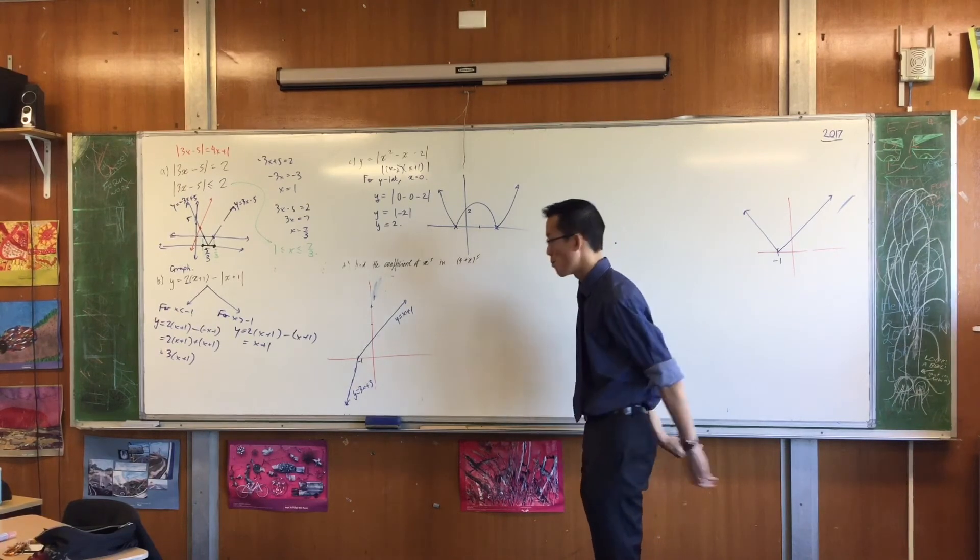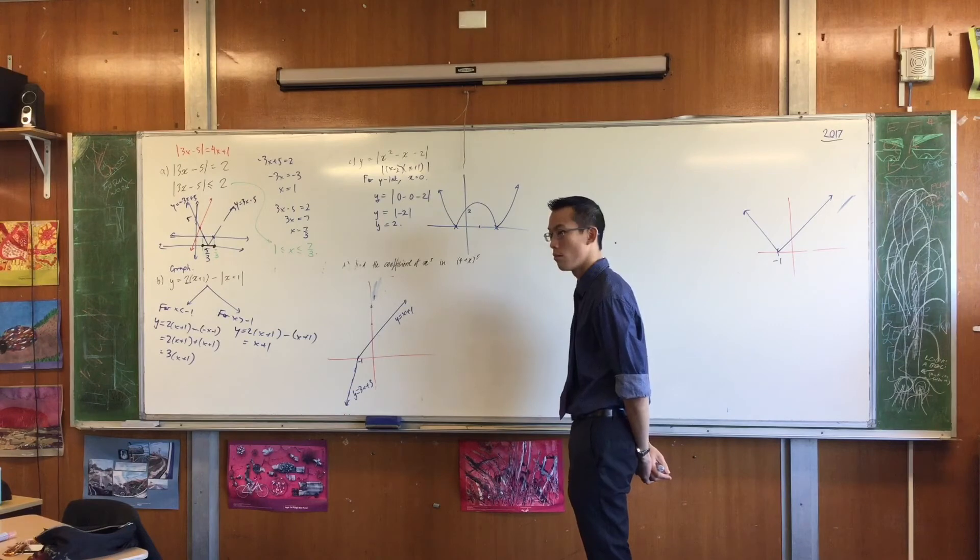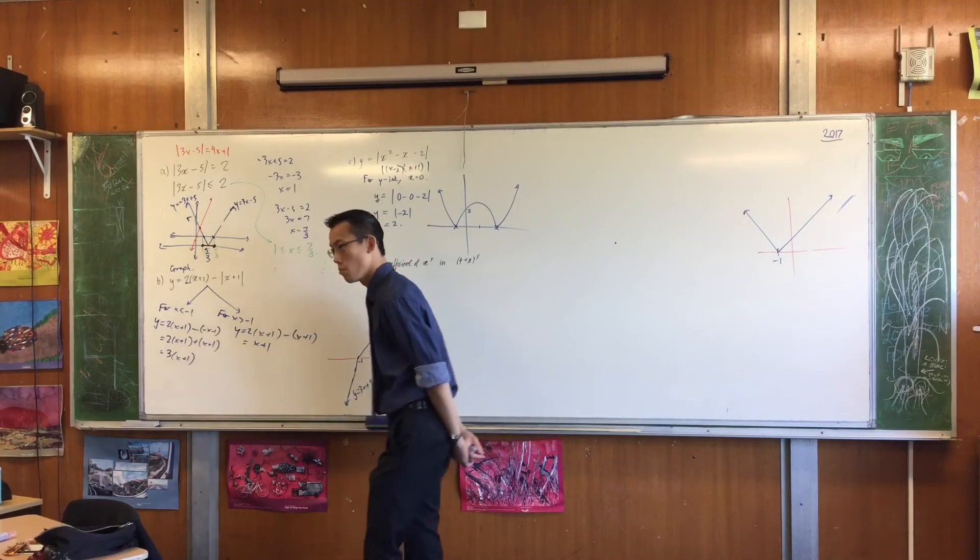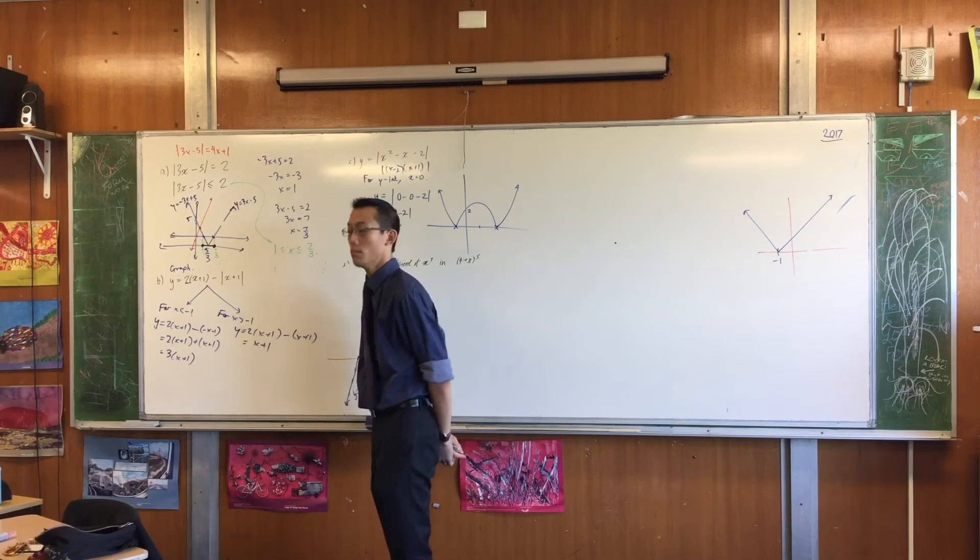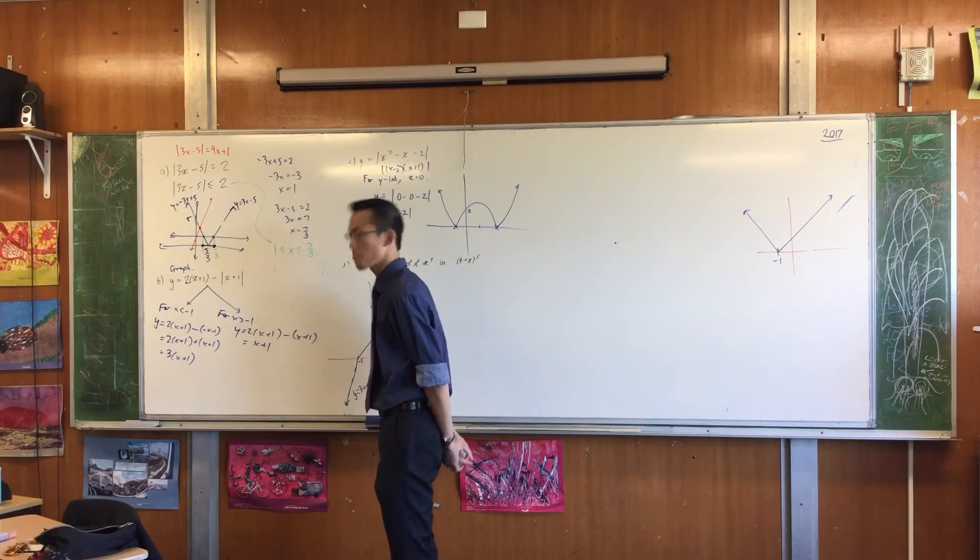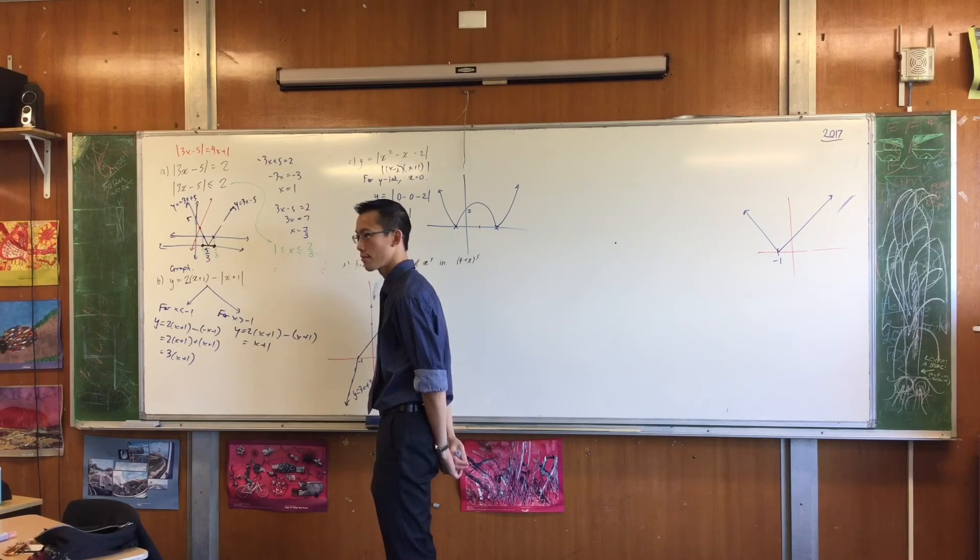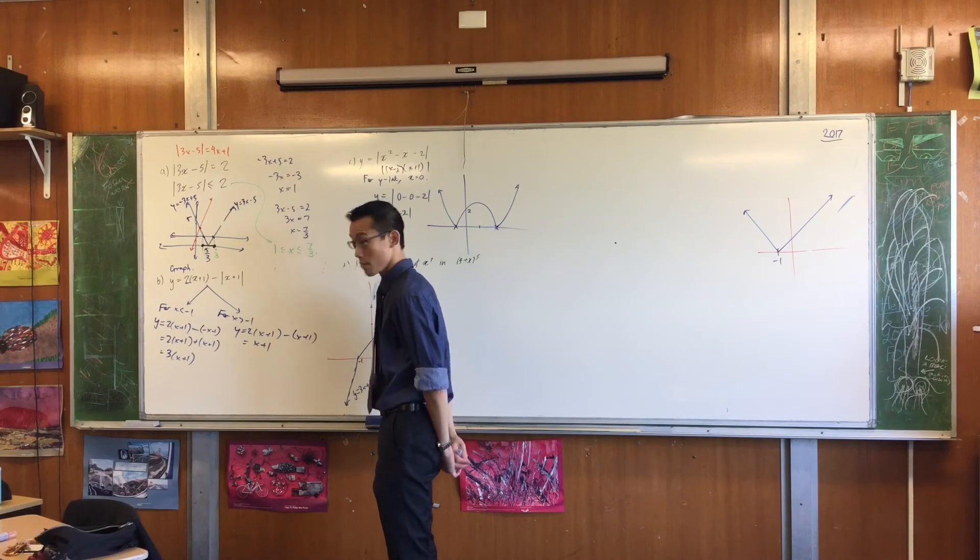Wait, so for that, why do you just go off the absolute value graph? Like you said, your domains are for x is less than minus 1 and x is greater than minus 1. So why do you just, why can't you base it off the 2(x plus 1)?